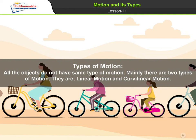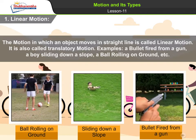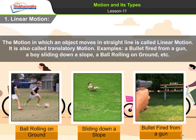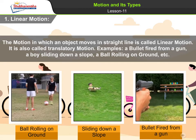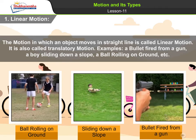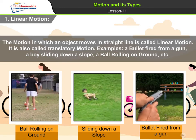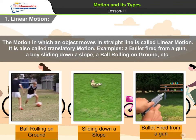Types of Motion. All objects do not have the same type of motion. Mainly there are two types of motion: Linear Motion and Curvilinear Motion. Linear Motion is the motion in which an object moves in a straight line. It is also called Translatory Motion. Examples include a bullet fired from a gun, a boy sliding down a slope, and a ball rolling on the ground.